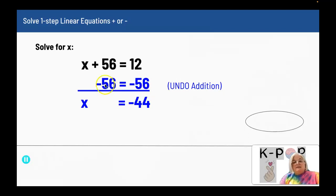And I end up with X equals 12 plus negative 56 is negative 44. So I undo the addition by subtraction. My final answer is X equals negative 44.